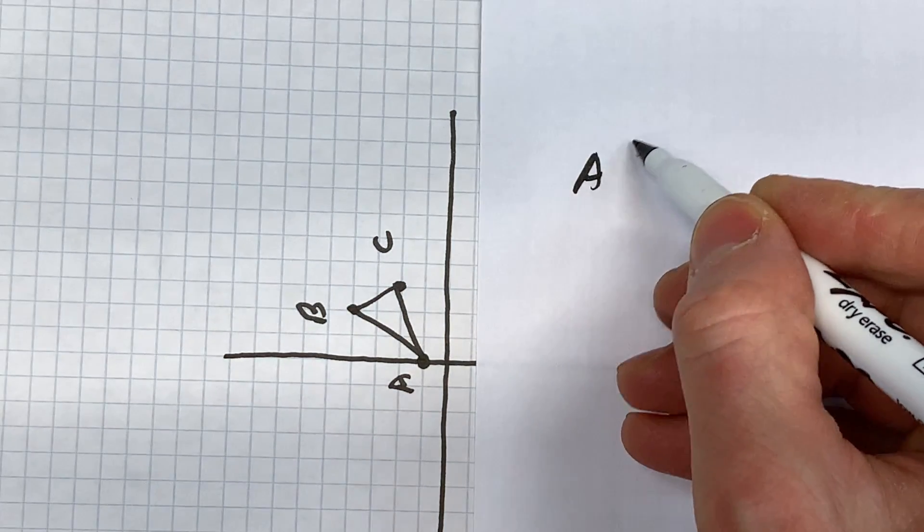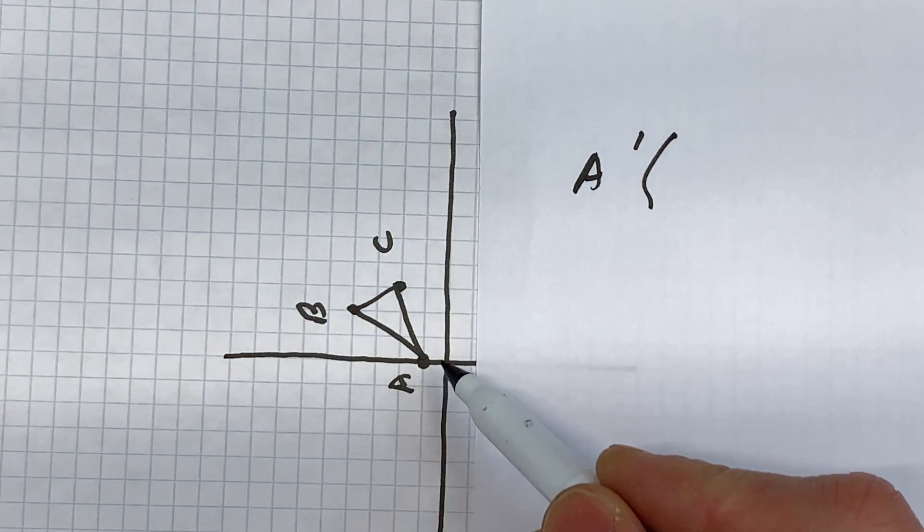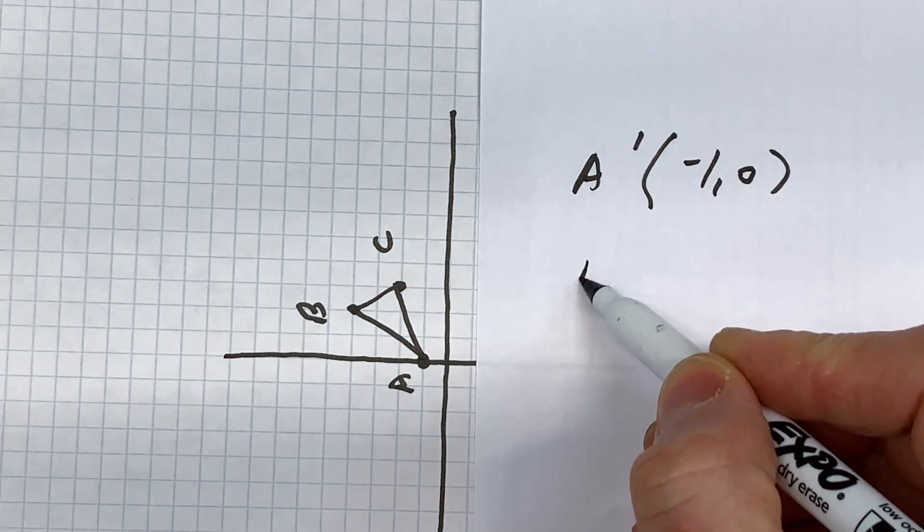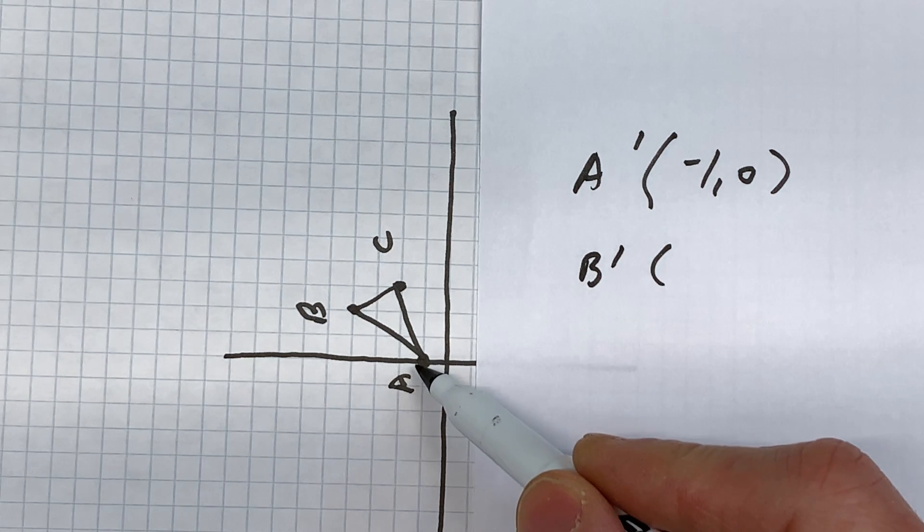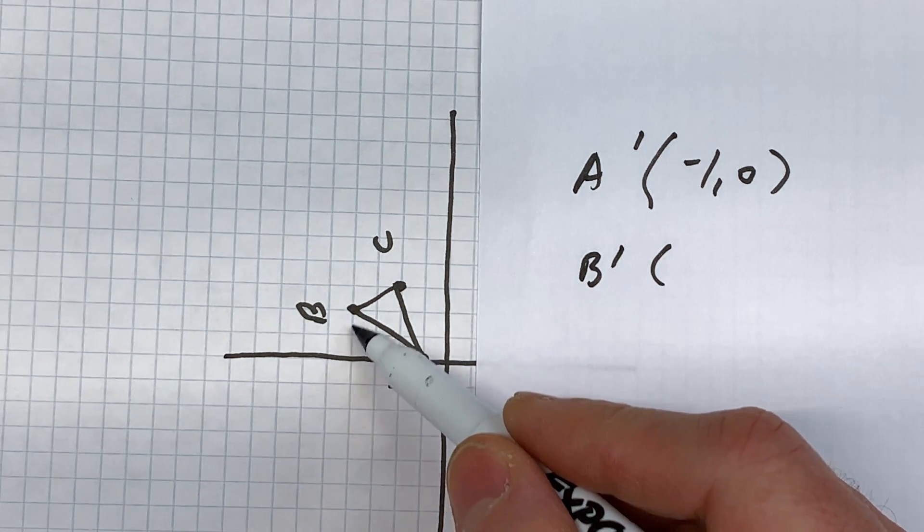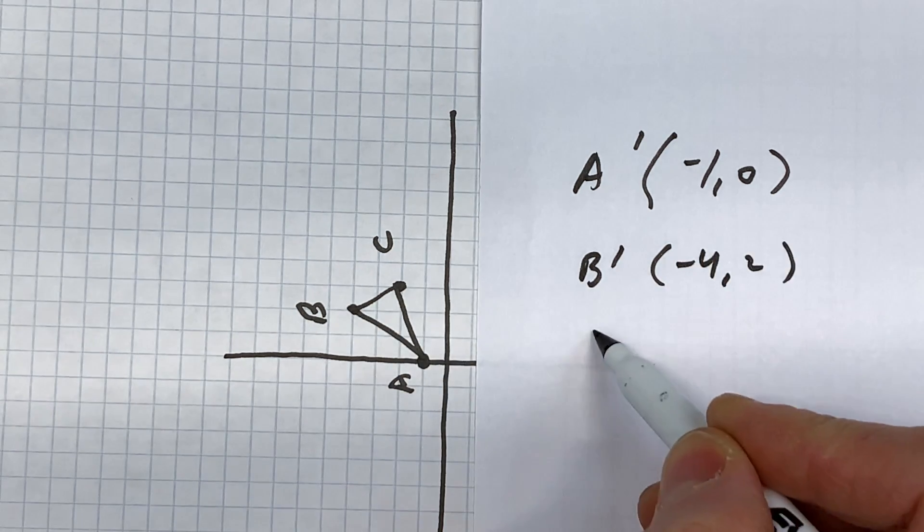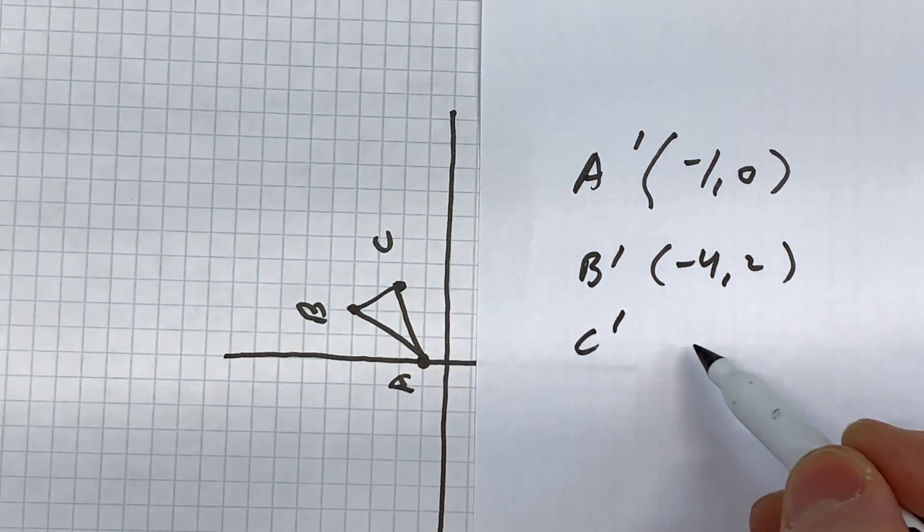So A prime is going to be at negative one, zero. B prime looks like it's at negative four, two. And C prime is at two, three.